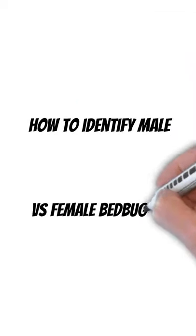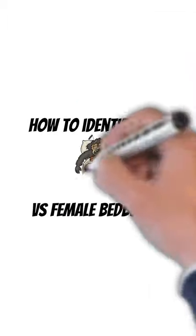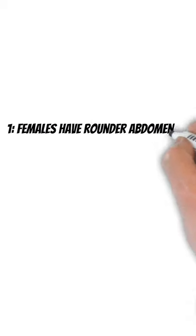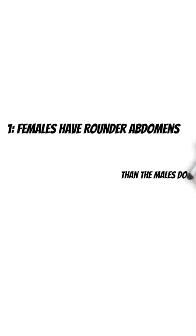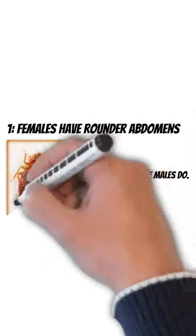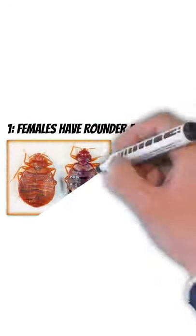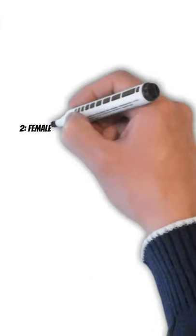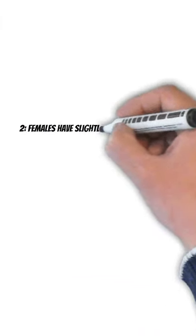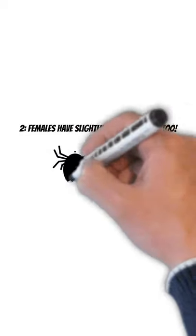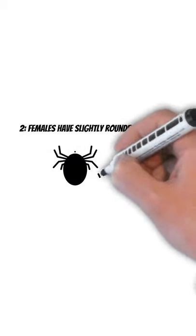Hello everybody, welcome to Pest Prints. We're going to learn how to identify a male versus female bed bug. The first thing is females have a rounder abdomen than the males. If you see the drawing here, the male is on the right and the female is on the left. They also have a rounder body overall.